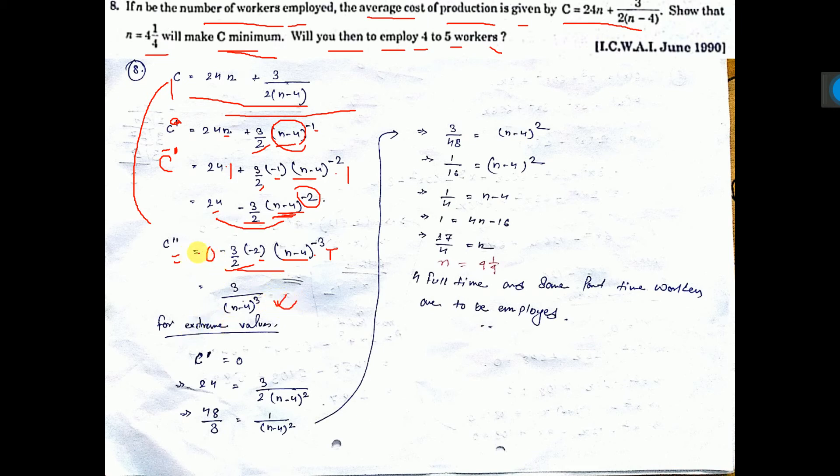Simplify, you are getting this. Now for extreme value, C dash equal to 0, that means this thing equal to 0. So this thing is written in this way, one is sent to the right hand side. Now cross multiply. See, 2 times 24, that is 48, 3 is coming there.